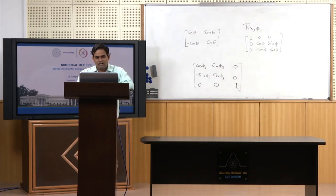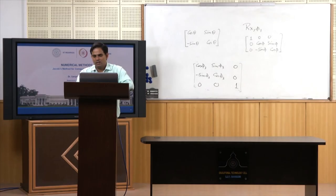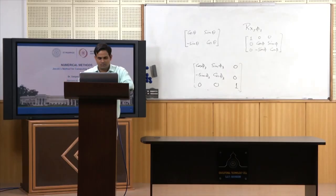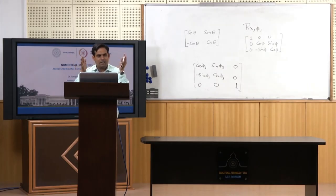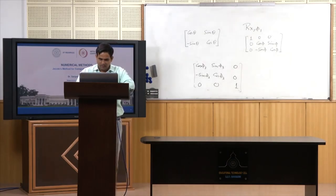The size of the off-diagonal part decreases by applying the Jacobi transformation. Post-multiplication of A by J_1 yields changes in columns P and Q, and pre-multiplication of A by J_1-transpose brings changes in rows P and Q. Hence the transformation A' = J_1-transpose · A · J_1 alters only rows P and Q and columns P and Q of A, with no change in the rest.